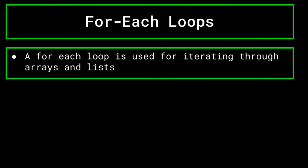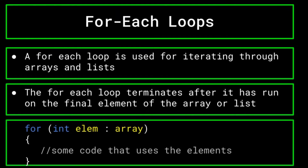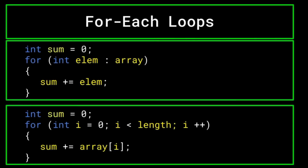After the for loop is the for each loop. A for each loop is used for iterating through arrays or lists. Essentially, the loop will go through each element in the array and use that element to carry out some instructions. The for each loop terminates after it has run on the final element of the array. This has a variety of uses — for instance, summing up the elements of an integer array, creating a new array that only contains elements greater than some value, or just printing out each of the elements. Note that if you know the size of the array, you can loop through its elements with just a for loop using indices, similar to the one shown on screen now.